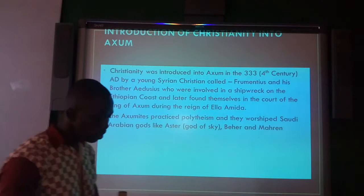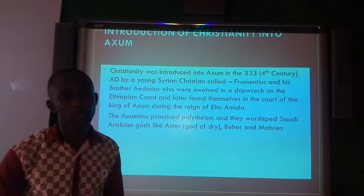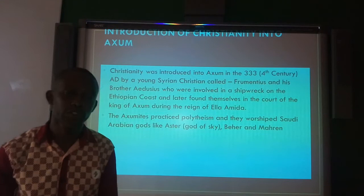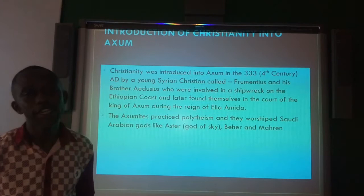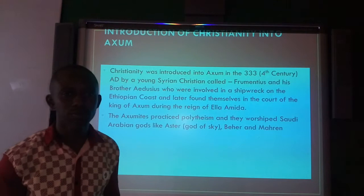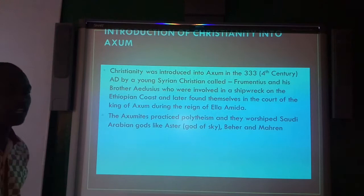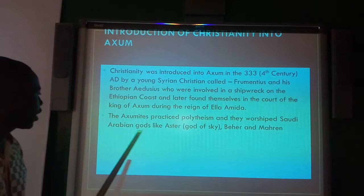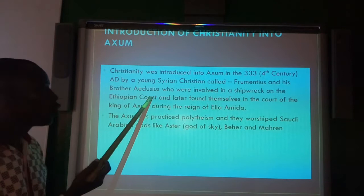Let us now look at how Christianity came into Aksum — the introduction of Christianity into Aksum. Christianity was introduced by a young Syrian Christian called Frumatius and his brother Palatius, who were involved in a shipwreck and found themselves on the Ethiopian coast. These two brothers later found themselves in the court of Aksum during the reign of a king. The Aksumites had been practising polytheism, worshipping South Arabian gods. Frumatius and Palatius were the ones who brought Christianity into Aksum.